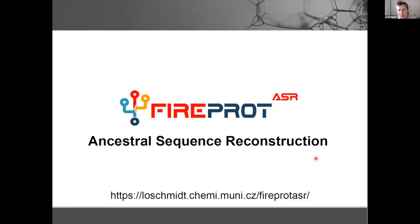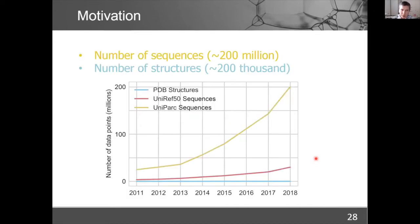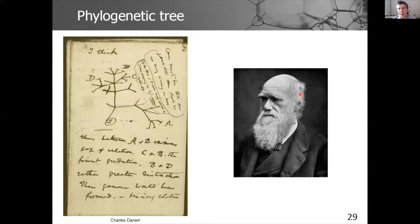FireProt requires a protein structure, so we also developed FireProt ASR for ancestral sequence reconstruction. The motivation is clear: there are approximately 200,000 structures in the PDB database, but nearly a quarter of a billion protein sequences. Very often you don't have a structure but can find the sequence and many homologous sequences. Sequence-based prediction of stable mutations is therefore very interesting, and ancestral sequence reconstruction can help greatly.